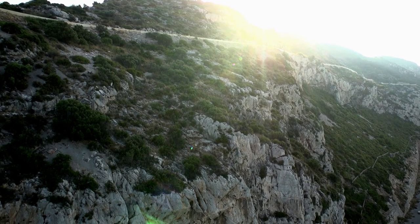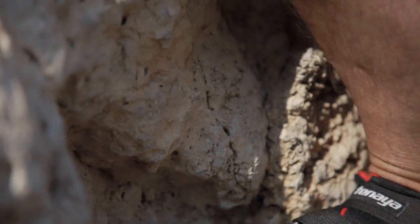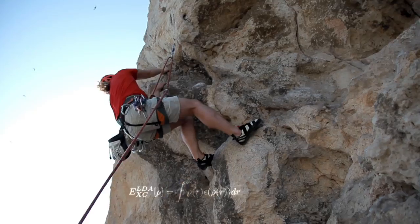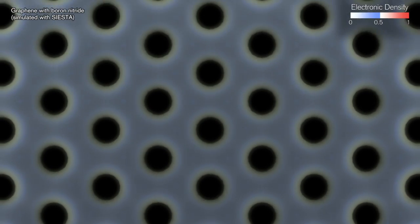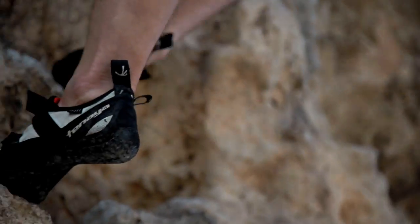Supernovae are crucibles where all the elements we know of are synthesized — the very elements that form everything around us and even our own bodies. Today, we live in a privileged age. We can access materials atom by atom, electron by electron, and thus get to know and control their properties in the most intimate way. SIESTA is a program for calculating the electronic structure of any type of material from first principles, meaning we don't depend on any measurements on the material. We start from basic quantum mechanical equations, so we can also do calculations on materials that don't even exist yet. Stronger ropes, lighter metals, harder plastics.